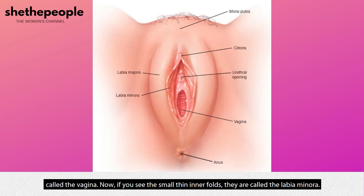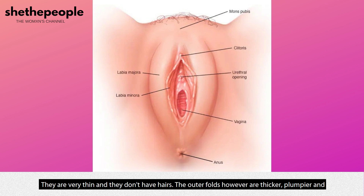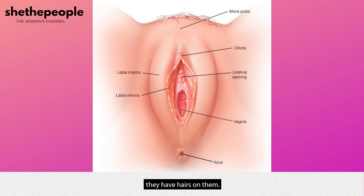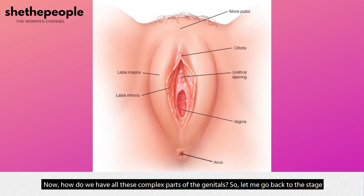The small thin inner folds are called the labia minora. They are very thin and they don't have hairs. The outer folds, however, are thicker, plumpier, and they have hairs on them.